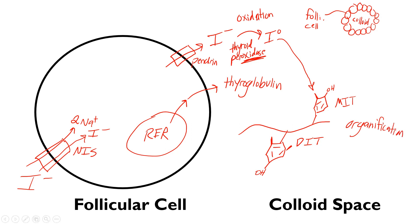The next process after organification is called coupling. So to recap: the NIS transporter brings in sodium and iodine, the iodine travels through the pendrin transporter into the colloid, gets oxidized to atomic iodine, then binds once or twice to tyrosine segments making MIT or DIT. Then they couple together — MIT plus DIT forms T3, and DIT plus DIT forms T4.